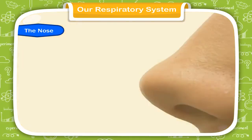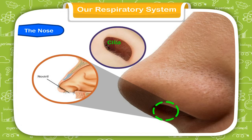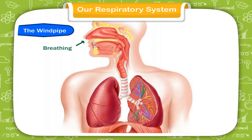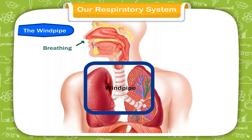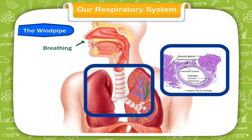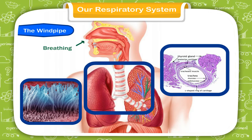Let us understand the function of the nose. The nostrils act as the air intake, bringing air into the nose where it is warmed and humidified. Tiny hairs called cilia present in the nostrils filter out dust and other particles from the breathed air. The air then enters the windpipe, which lies partly in the neck and partly in the chest cavity. The walls of the windpipe are strengthened by stiff rings of cartilage to keep it open, and the windpipe is also lined with cilia which sweep fluids and dust particles out of the airway so they do not enter the lungs.